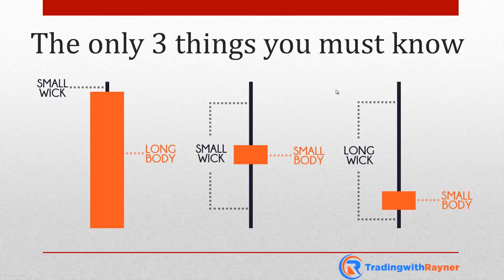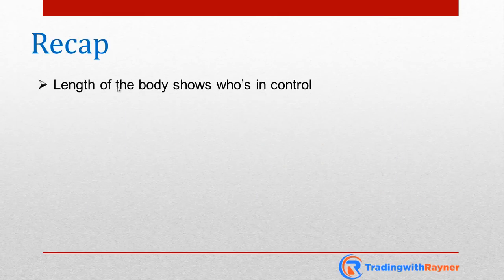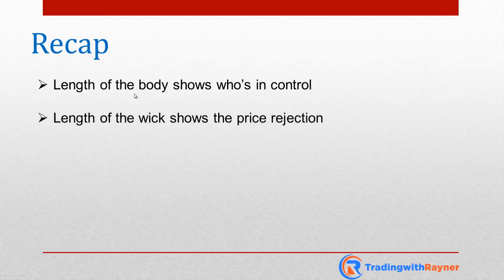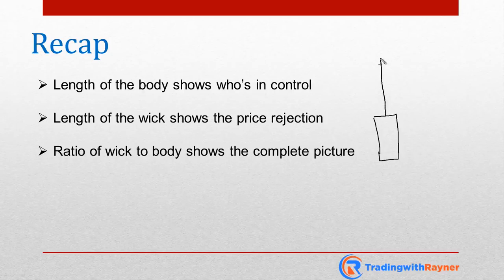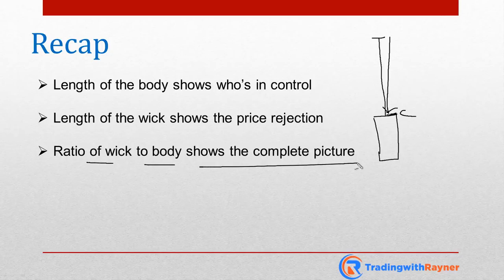So these are the only three things you need to know: number one, the length of the body shows who is in control; the length of the wick shows you the price rejection; and to get a complete picture, you want to look at the ratio of the wick to the body. Sometimes you can have a very large bullish body, but if the wick is also very long, it doesn't look so bullish anymore — because there's been price rejection from the high all the way down to where price closed. This is why you want to see the ratio of the wick to the body.